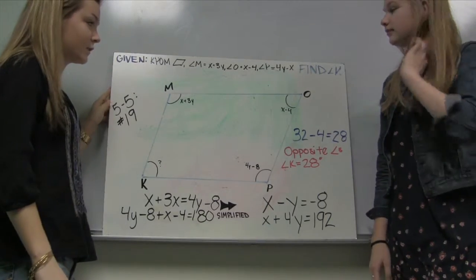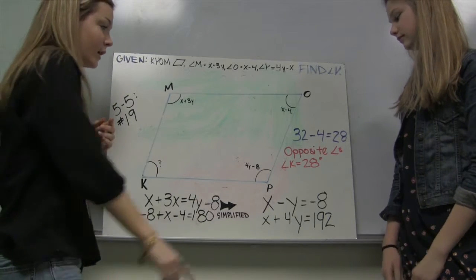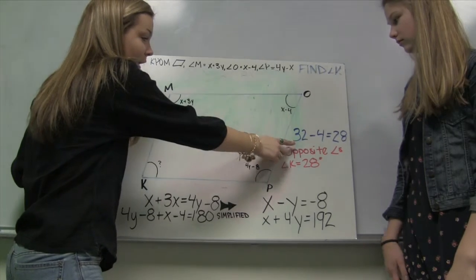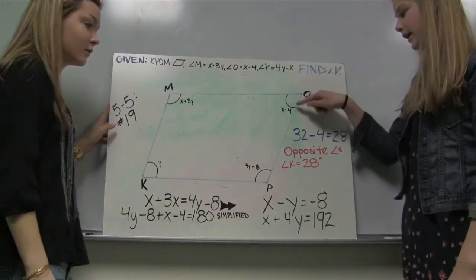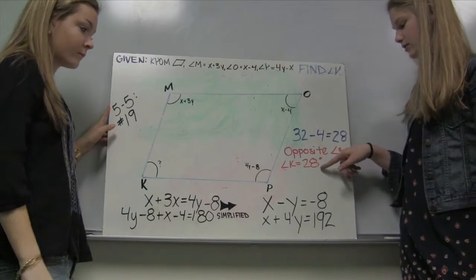And to get our final answer for the measure of angle K, we just put in the values that we got for x and y. And since these two are congruent, we knew that 32, which is our value for x, minus 4 gives you 28 by plugging it into O. So easily we can have our answer of K equals 28 degrees.